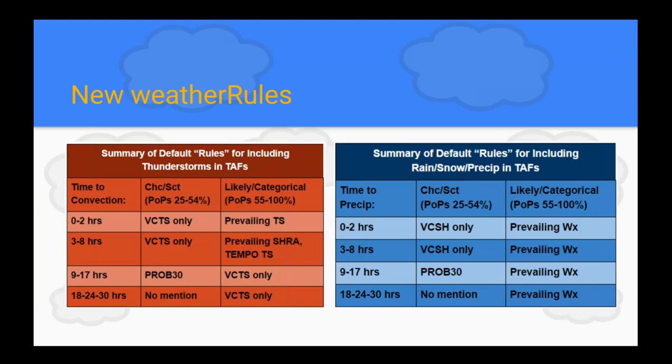Basically, in the short term, if you have likely or categorical for your weather, it's not reading your POPs — it's reading your weather string. That's going to determine that in the short term you'd probably get prevailing thunderstorms. The algorithm goes on further out in the TAF period where it would be VCTS if you had likely or categorical in your weather terms. These tables sum up what the new weather rules are.